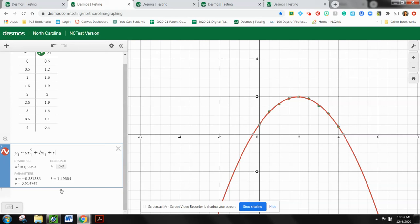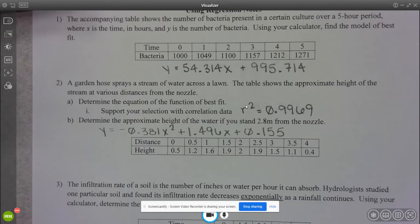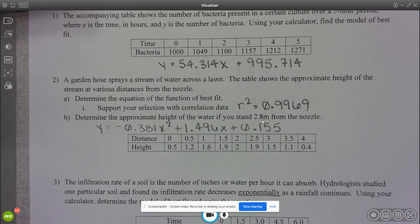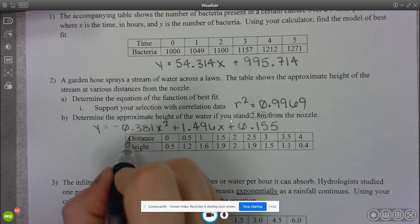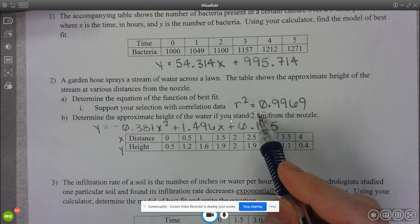So then I'm going to write down this equation because I'm looking here at question B. So Y equals negative 0.381X squared plus 1.496X plus 0.155. So coming back to our screen, this question is saying we're standing 2.8 meters from the nozzle and we have to find the height. So this is an X value because this was X and this was Y. So I'm substituting 2.8 in for X.